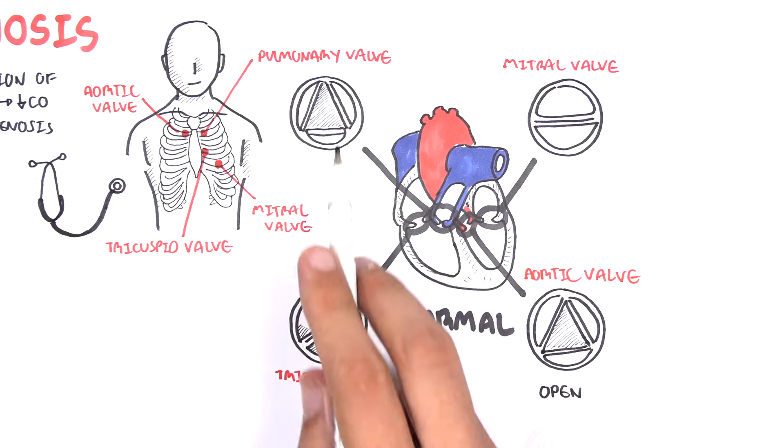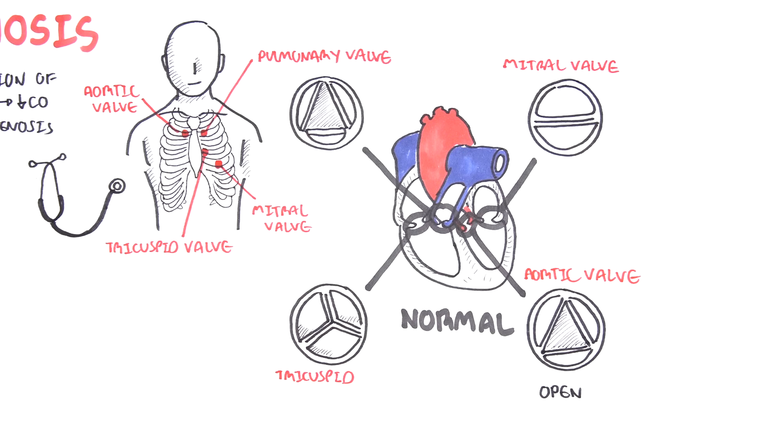During the cardiac cycle, when the aortic valve is open, the pulmonary valve is open as well. And when both these valves are open to pump blood out of the heart, the tricuspid and mitral valve close.